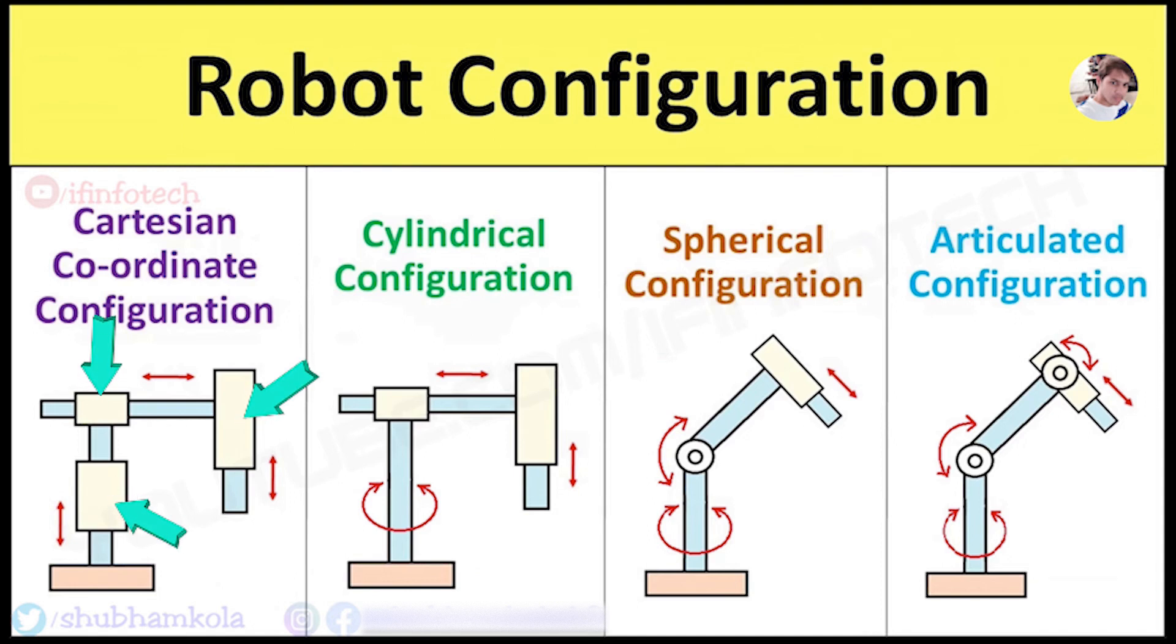These joints allow only linear motions along 3 principal axes: X, Y and Z. So it is also called XYZ Robot.